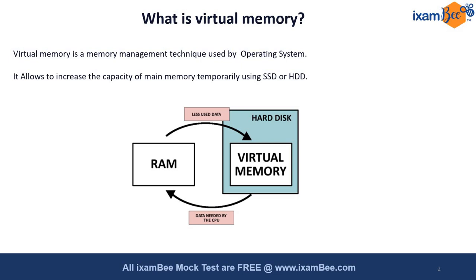What does virtual memory actually do? Virtual memory allows you to increase the capacity of the main memory temporarily, and this is done using the SSD or HDD — the hard disk. Whatever you are doing is in the RAM, but if you are operating on so many tabs or utilizing something beyond the capacity of the RAM, virtual memory is used to tackle that situation.